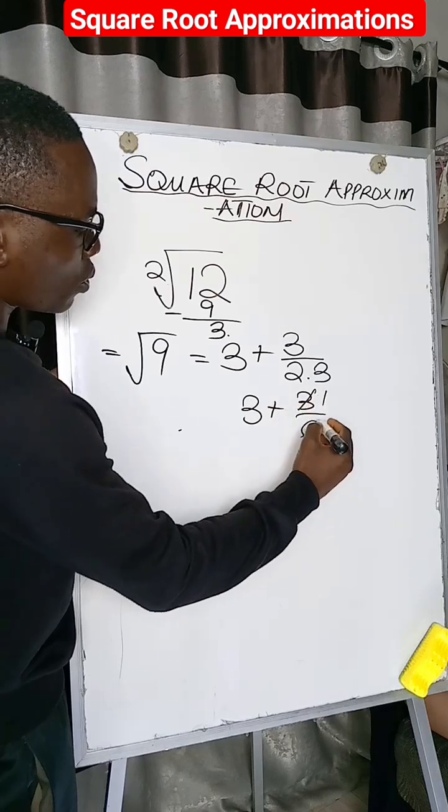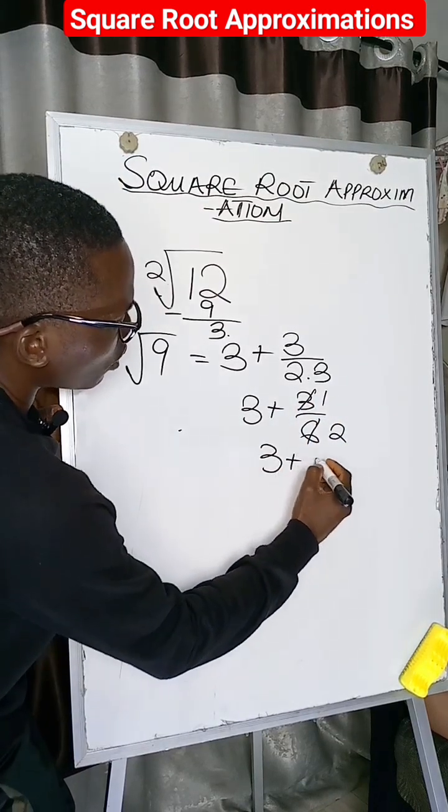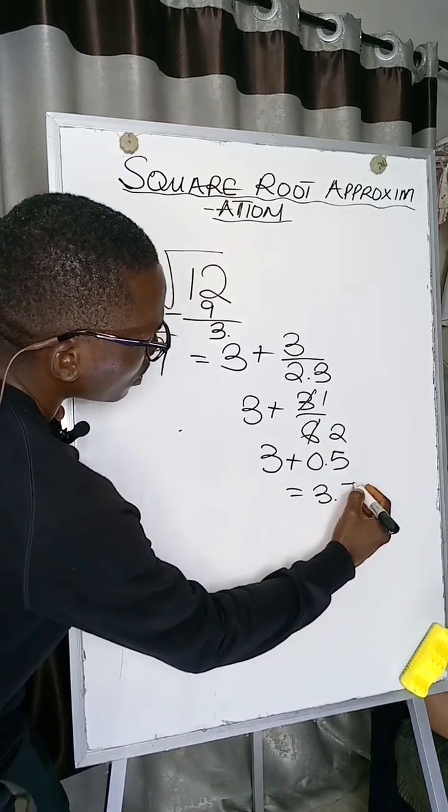And when you reduce this, 1 divided by 2 is going to give us 3 plus 0.5, and this will be equal to 3.5.